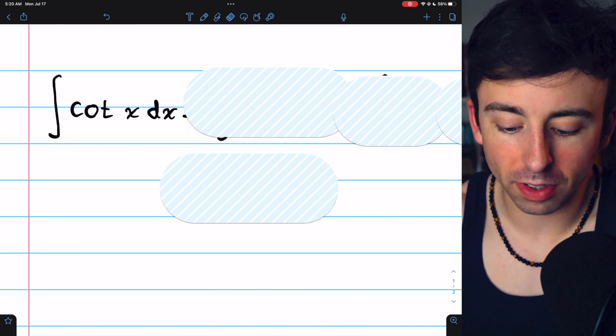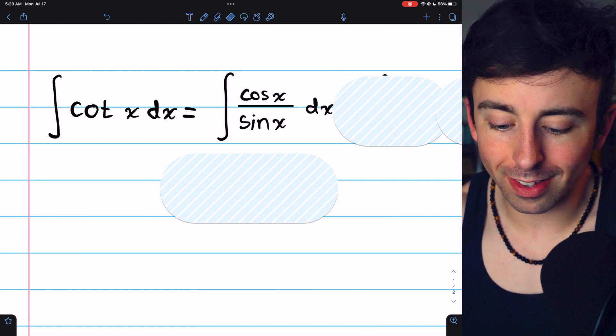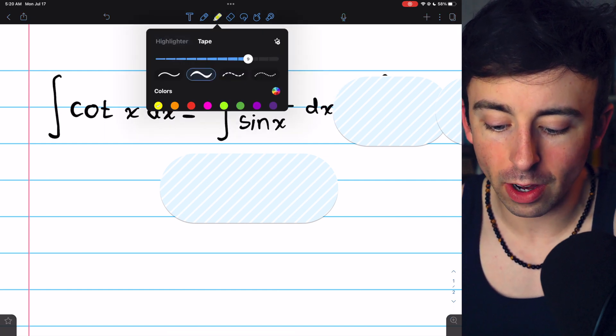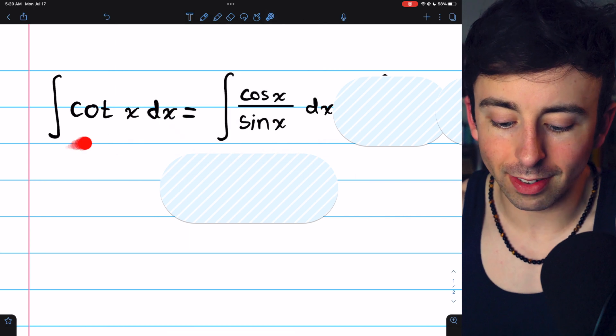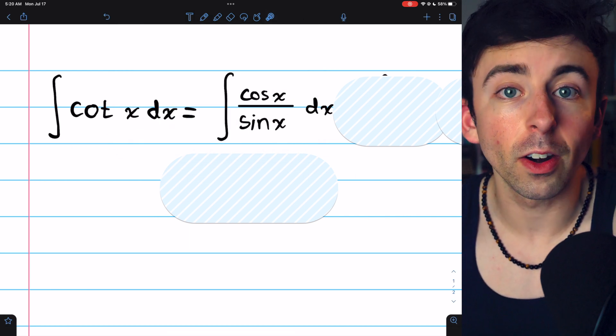We got to know that cotangent is the reciprocal of tangent, which means that cotangent is cosine over sine. So this is the integral of cosine over sine.